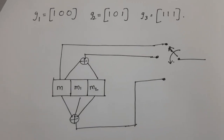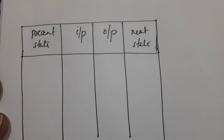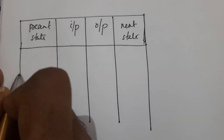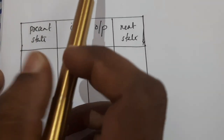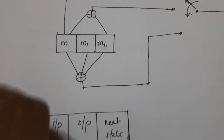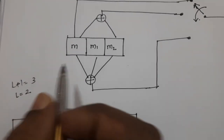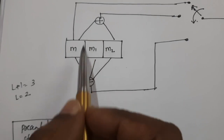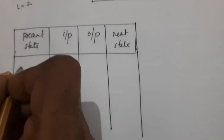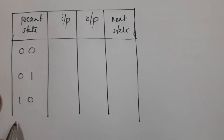For drawing the state diagram, first we will create the state transition table with columns for present state, input, output, and next state. Since this convolutional encoder has constraint length 3, we have L+1 equal to 3, or L equal to 2. So there are two memory elements, giving four states for this encoder. The four states are: 00 (A), 01 (B), 10 (C), and 11 (D).